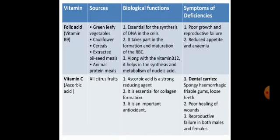Vitamin B9, called folic acid, is generally present in green leafy vegetables, cauliflower, cereal-extracted oil seed meals, and animal protein meals. Its biological function is essential for synthesis of DNA, cell formation, maturation of red blood cells, and along with vitamin B12, it helps in the synthesis and metabolism of nucleic acids. Deficiency symptoms include poor growth, reproductive failure, reduced appetite, and anemia.